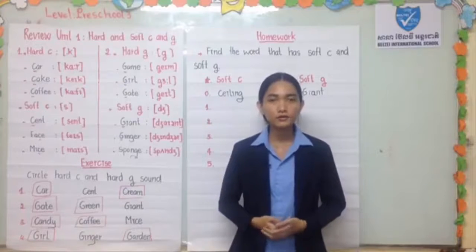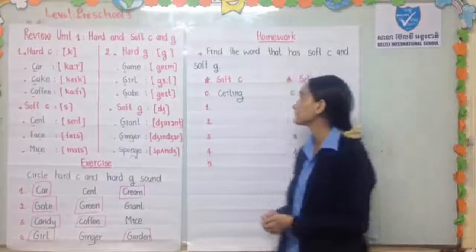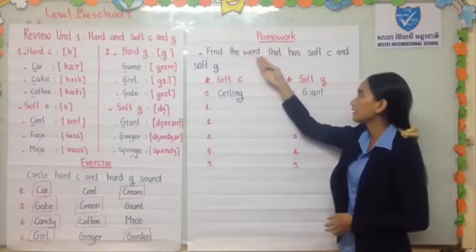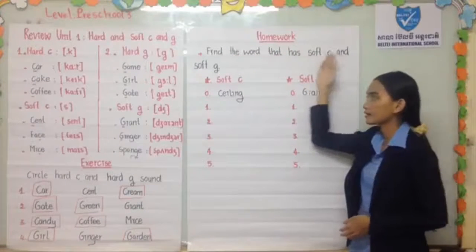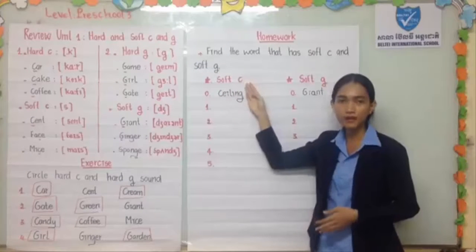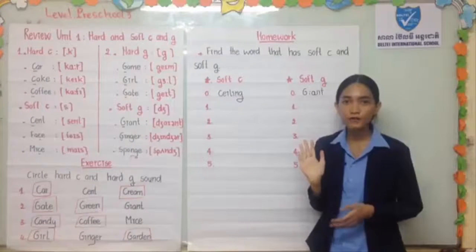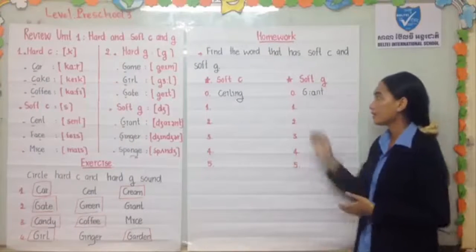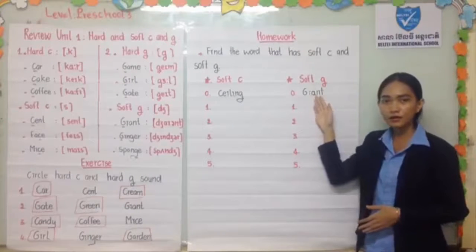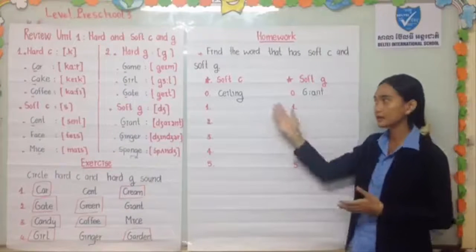So after you learn your lesson and do your exercise, you have one homework to practice at home. Your homework today is to find words that have soft C and soft G sounds. You have to find five more words with soft C and soft G.